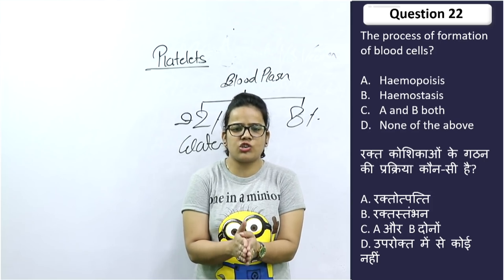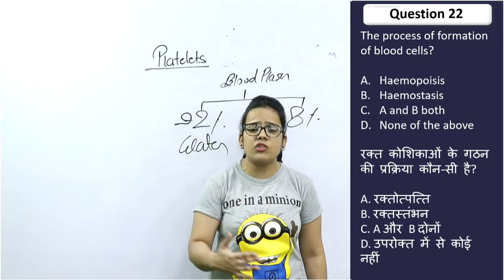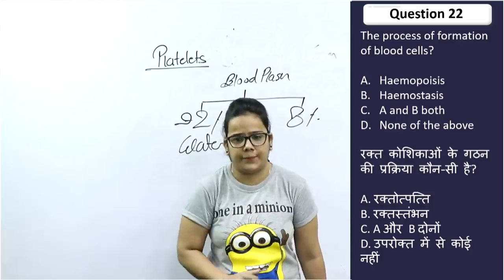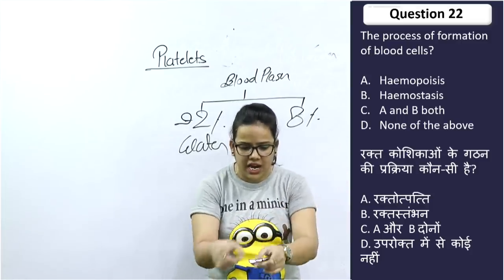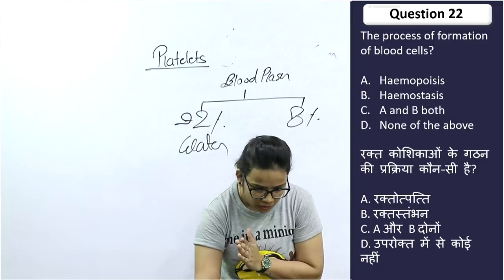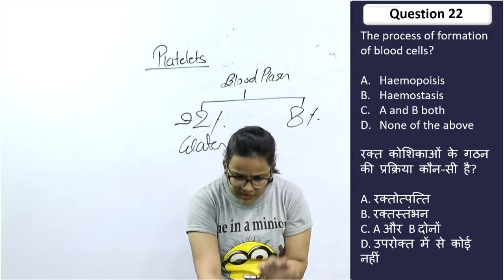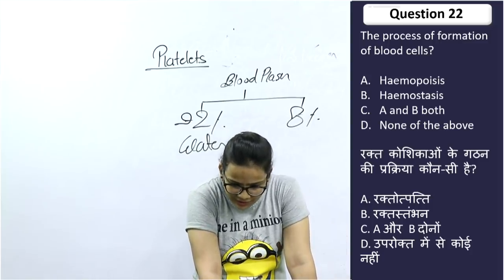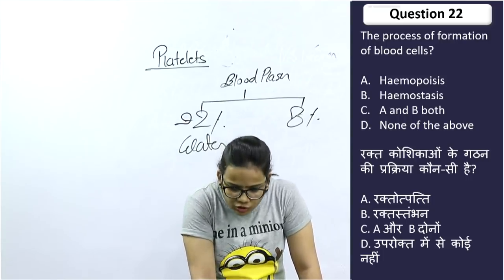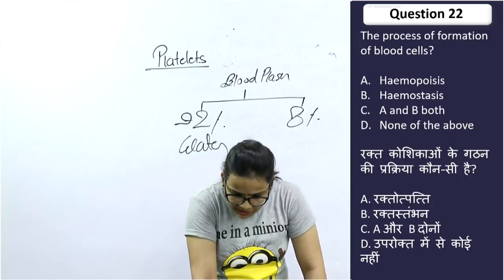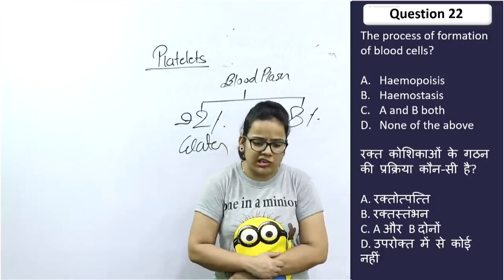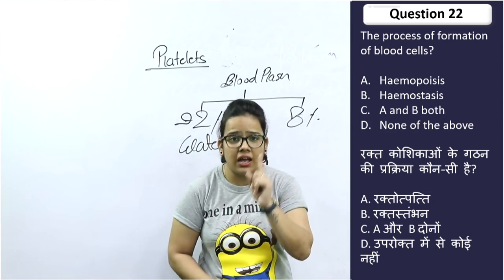The next question: The process of formation of blood cells is called what? The right answer is hematopoiesis — the process by which blood cells are formed and maintained in the body.